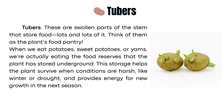Next, we have tubers. These are swollen parts of the stem that store food — lots and lots of it. Think of them as the plant's food pantry. When we eat potatoes, sweet potatoes, or yams, we're actually eating the food reserves that the plant has stored underground. This storage helps the plant survive when conditions are harsh, like winter or drought, and provides energy for new growth in the next season.